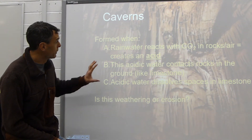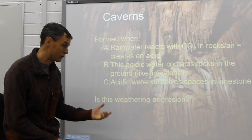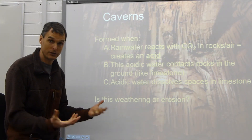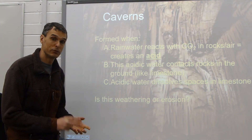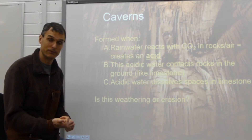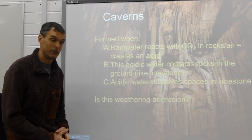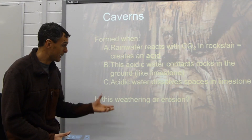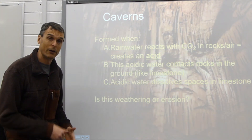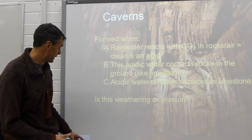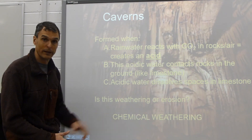So the question is: is what we're looking at weathering or erosion? Well, it is changing the rocks, so it's got to be weathering. The question then is, which of the two types of weathering is it — chemical or mechanical? If you said chemical, because we have an alteration through this process without a physical process, then you are correct. Caves are formed by chemical weathering.